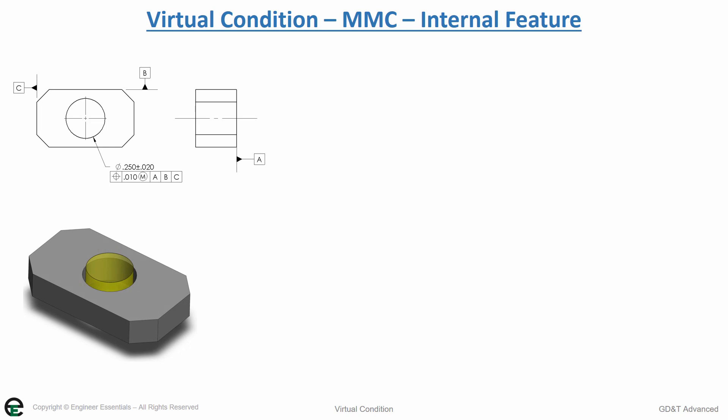The virtual condition for an internal feature at MMC is the inner boundary. We're trying to calculate what is the smallest area this hole can never cross to make sure that when we assemble a part through it, we know what our limit is. We would then design some sort of pin or fastener that would have to be smaller than this virtual condition to ensure that there's always clearance for assembly.